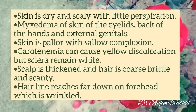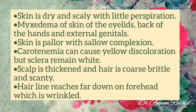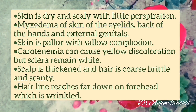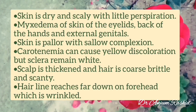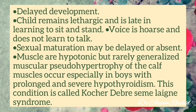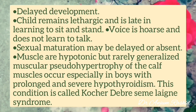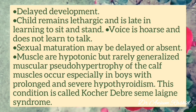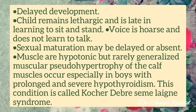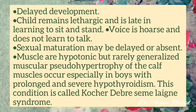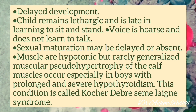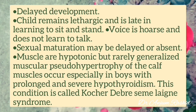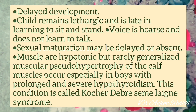The scalp is thickened and hair is coarse, brittle, and scanty. The hairline reaches far down on the forehead, which is wrinkled. There is delayed development; the child remains lethargic and is late in learning to sit and stand. Voice is hoarse and the child does not learn to talk. Sexual maturation may be delayed or absent. Muscles are hypotonic, but rarely generalized muscular pseudohypertrophy of the calf muscles can occur, especially in boys.